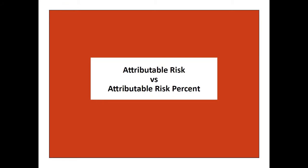Attributable risk and attributable risk percent are two terms used to estimate the relationship between risk factor exposure and the occurrence of disease, but they often get mixed up. We will explain them and give some examples.